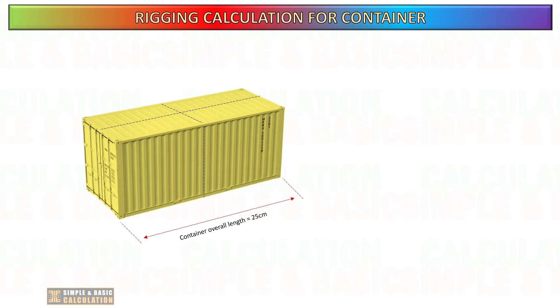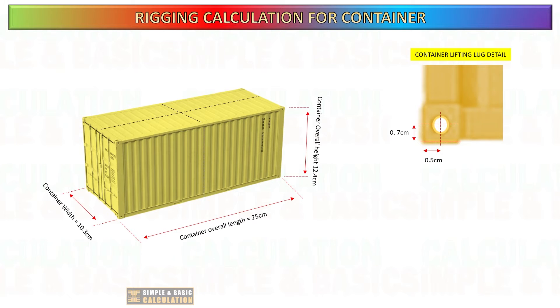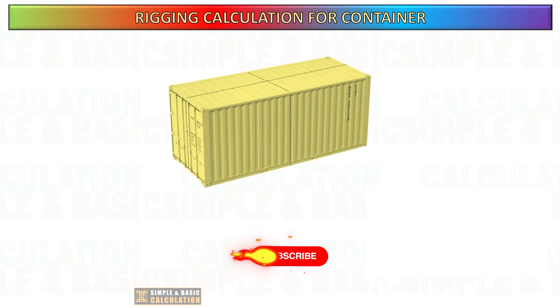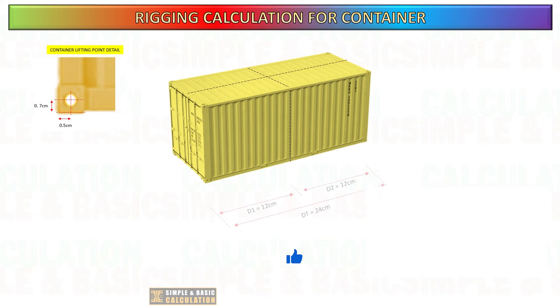In this example, the dimensions of the container are as follows: the length is 25 cm, the width is 10.3 cm, and the overall height is 12.4 cm. This dimension is same in my container model, allowing us to compare the results of manual calculations with actual ones. The lifting lug of the container is positioned 0.5 cm horizontally from the corner and 0.7 cm vertically from the bottom.